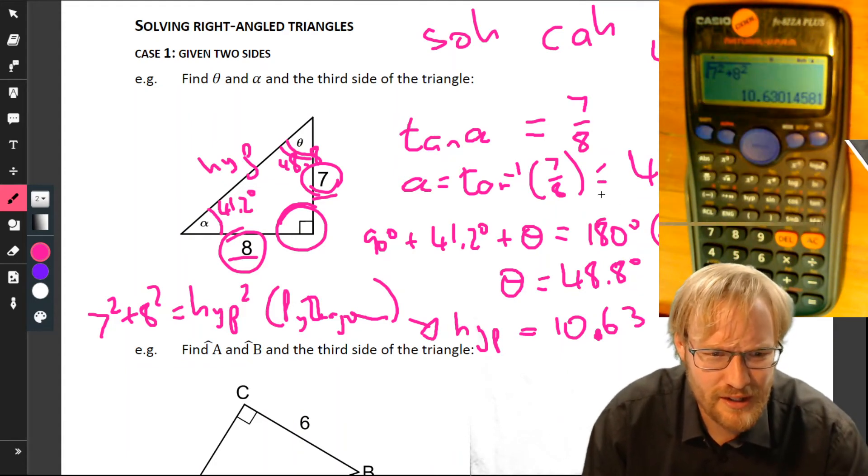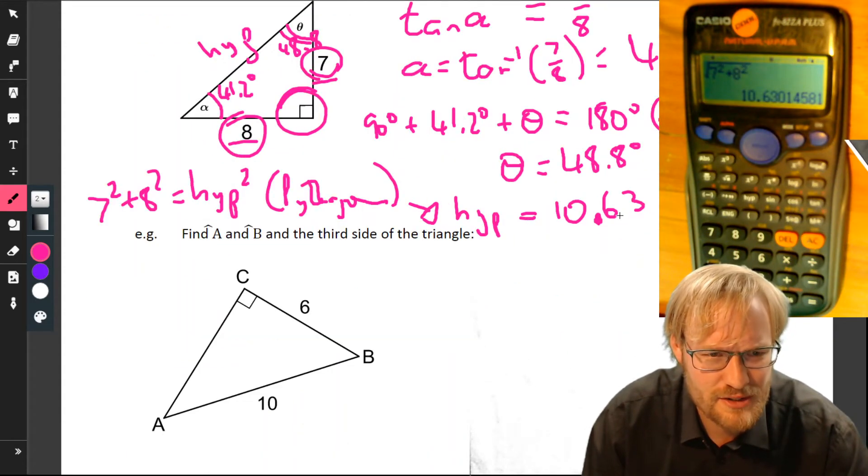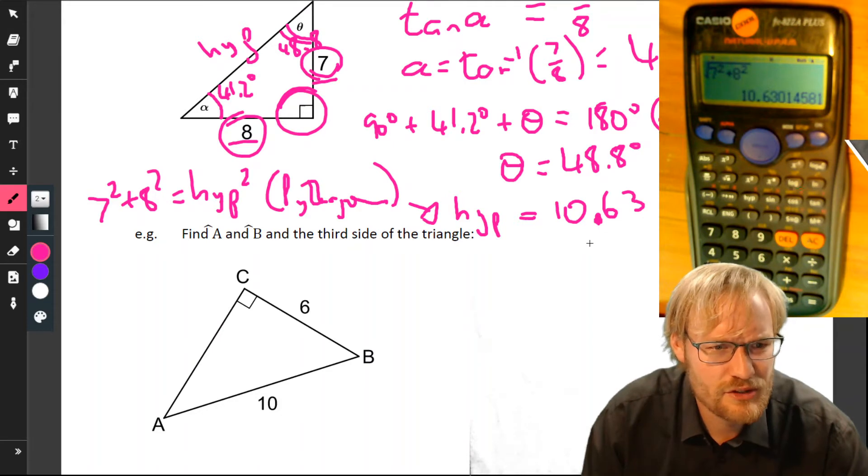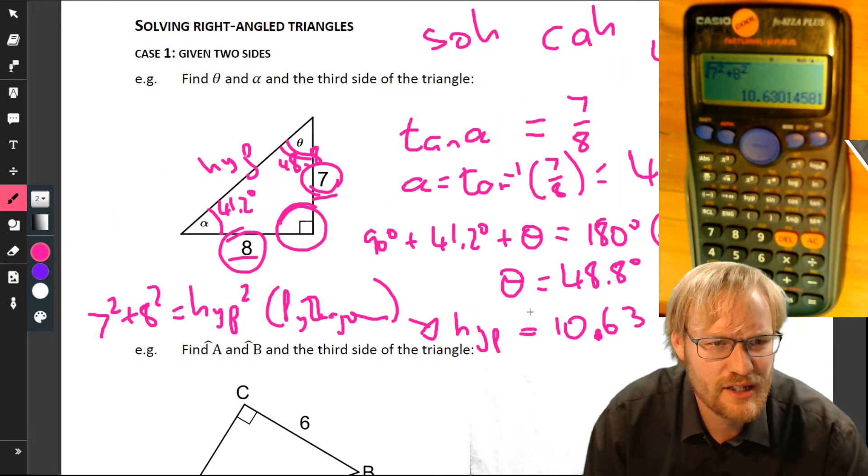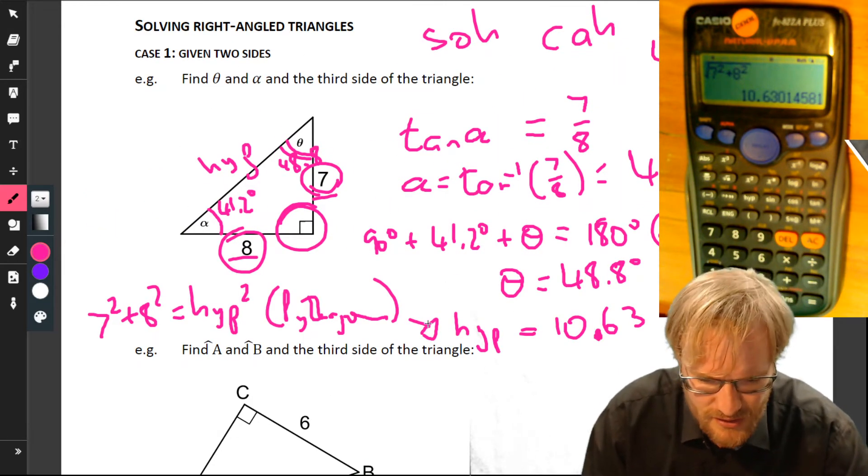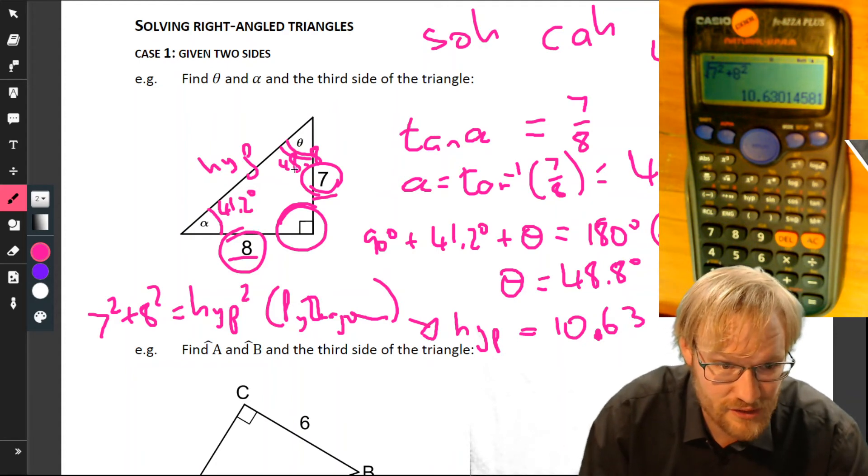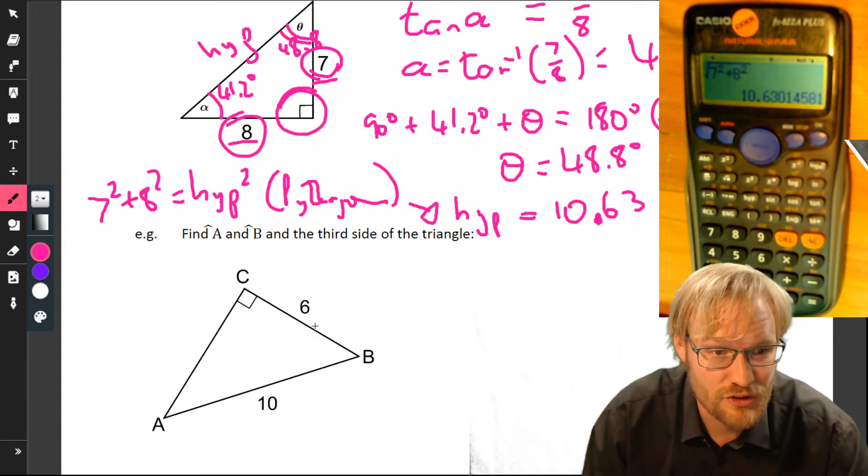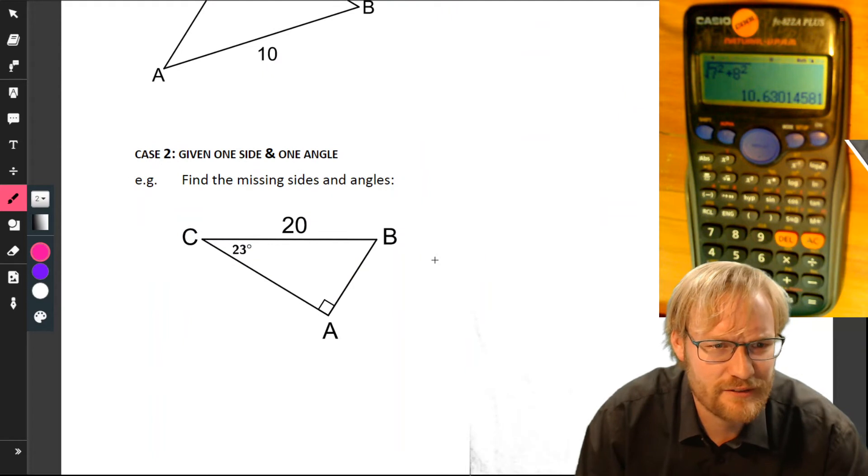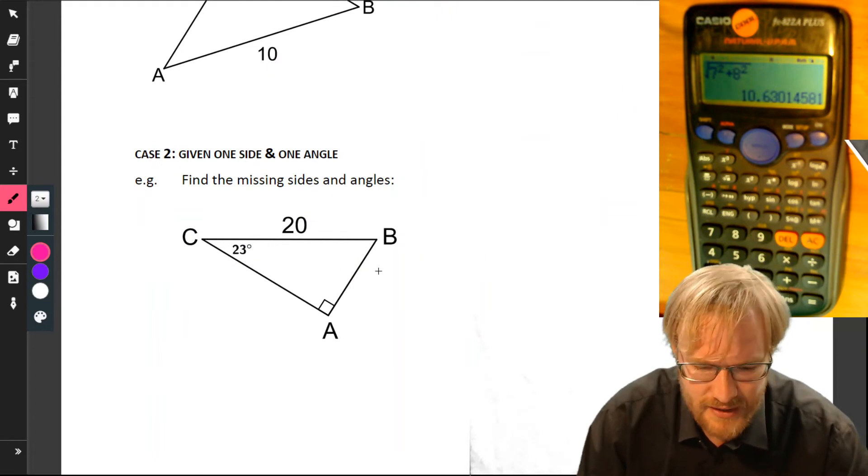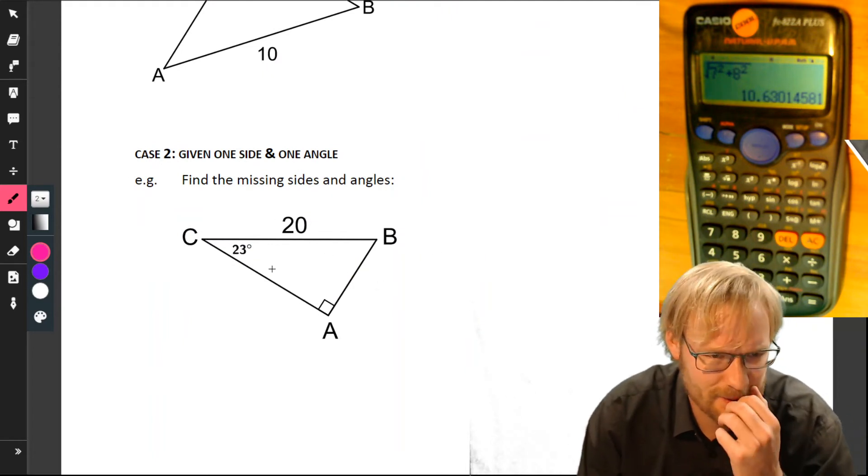There we go. There's our general idea of how we could work this out. This one here, find A, B, and the third side, I'm going to leave you to do because it's going to be a similar idea. What about if we're given an angle and a side?